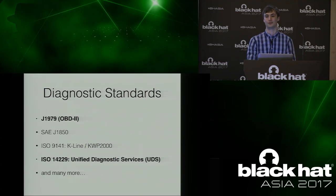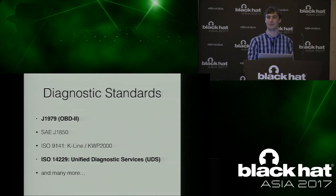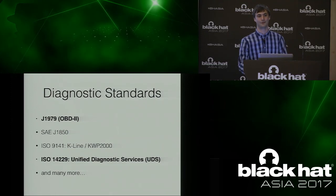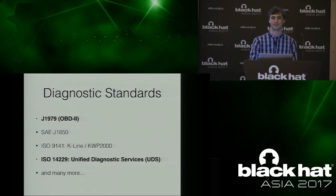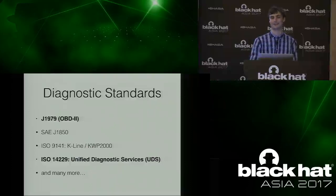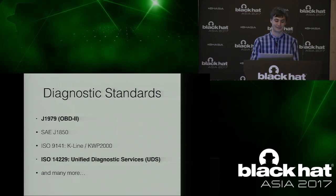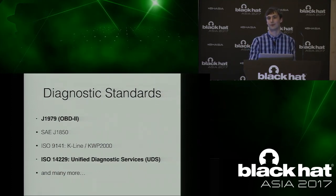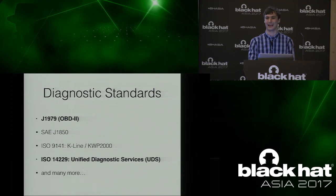J-1850 is a really ancient protocol used up to about 2006 in some American vehicles. ISO 9141, which is K-Line or Keyword Protocol 2000, is used for some diagnostics but less and less. Then there's the big one we'll focus on: ISO 14229, or Unified Diagnostic Services — UDS, as I'll refer to it from now on. That's basically present in any vehicle made nowadays; it's become the most common way of doing diagnostics.